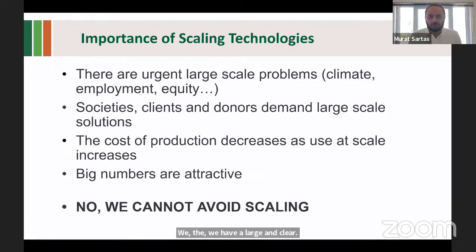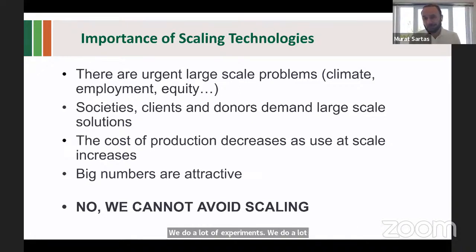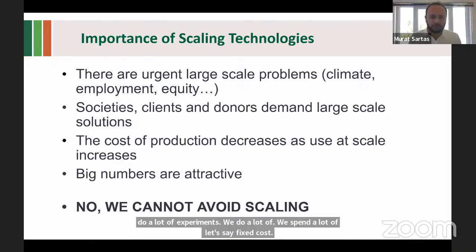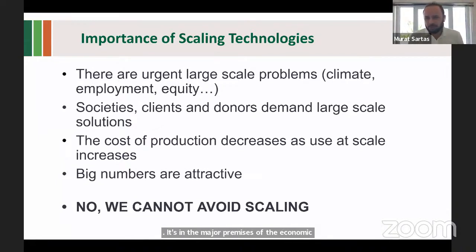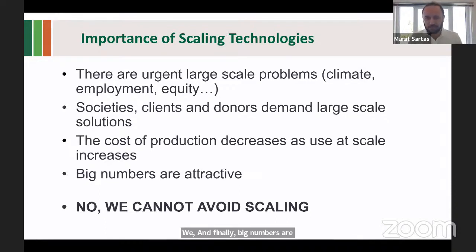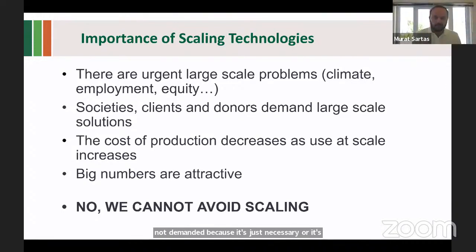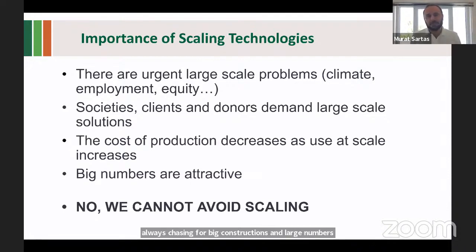A third reason is that the cost of production decreases. To develop a digital or agronomy solution requires a lot of experiments and fixed costs. As we increase use, we decrease the unit cost — a major premise of economic theory. And finally, big numbers are attractive. Scaling is demanded not just because it's critical, but also because it's nice. Economies moving from low-income to middle-income always chase big constructions and large numbers — scaling has psychological and social elements.